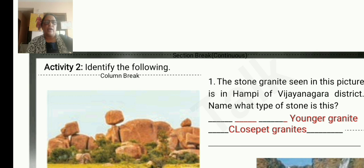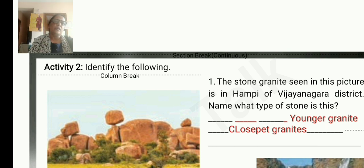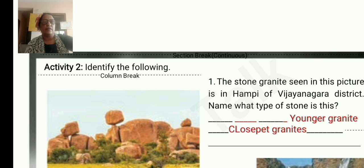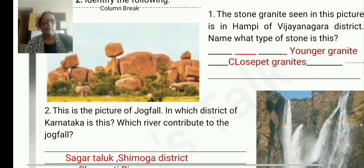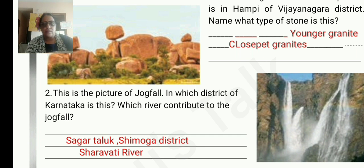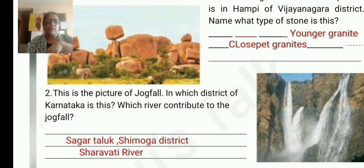Activity 2: Identify the following. The stone granite seen in the picture is in Hampi, Vijayanagar district. Name what type of stone this is — you can write it as younger granite or close-pet granite. The next picture is of Jog Falls. It is in Shivamogga district, and the Sharavati river contributes to Jog Falls.